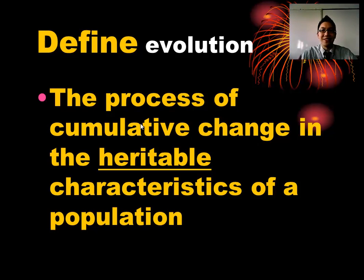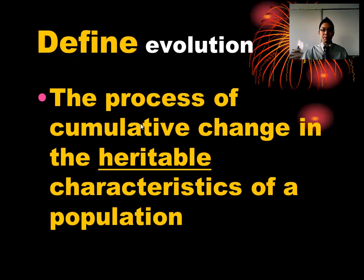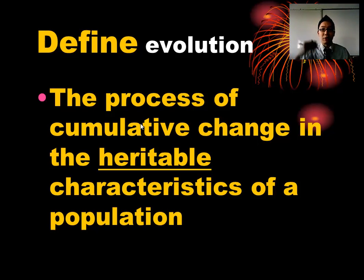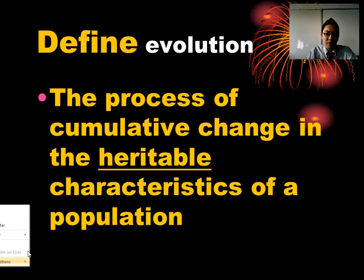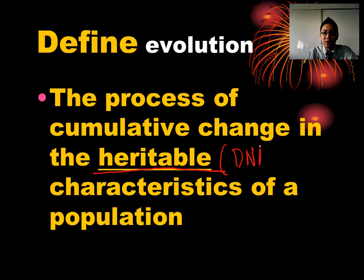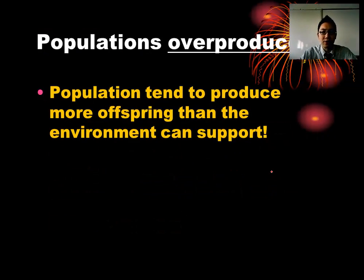Here is the definition of evolution: the process of cumulative change in the heritable characteristics of a population. Cumulative change means changes building up over time — not like getting more muscles from working out, but across generations, which could be hundreds of thousands or millions of years. Heritable means the changes are inherited — coded in the genetic information, tracked in the DNA.